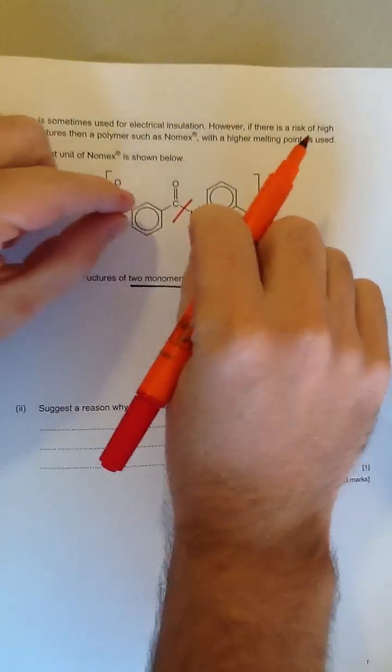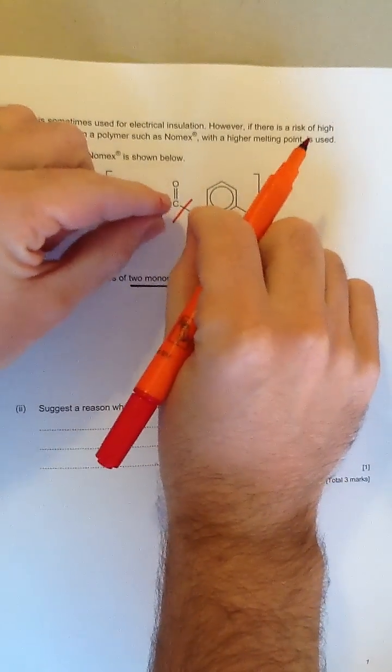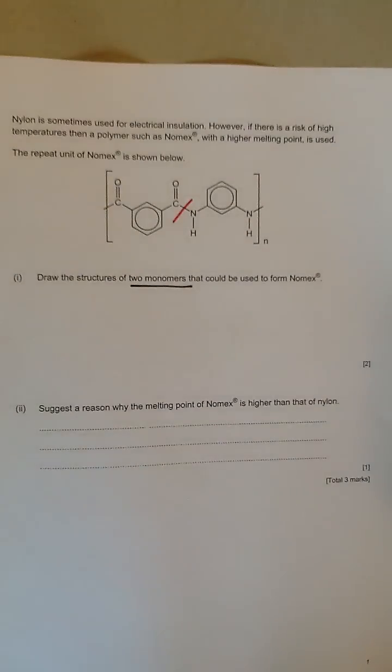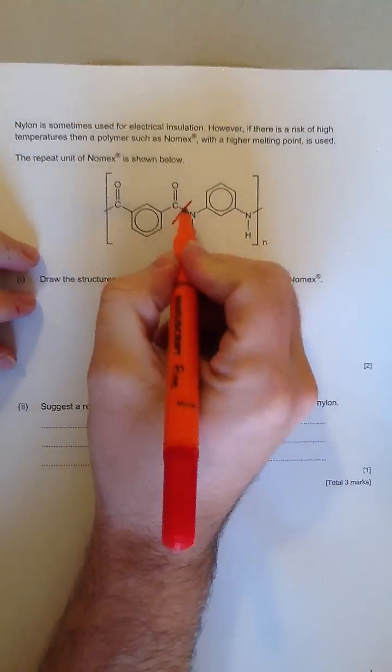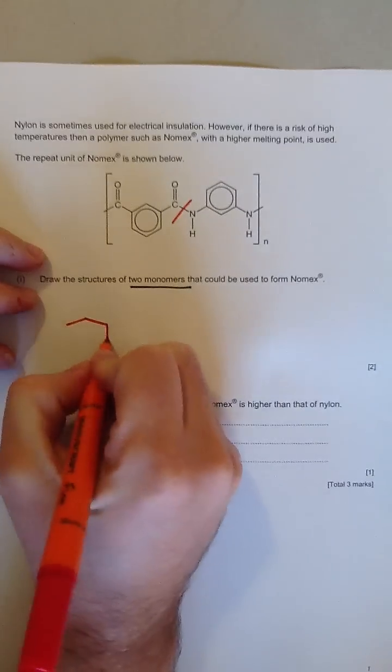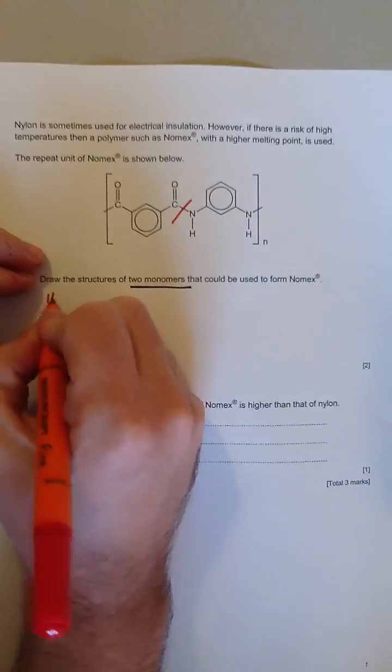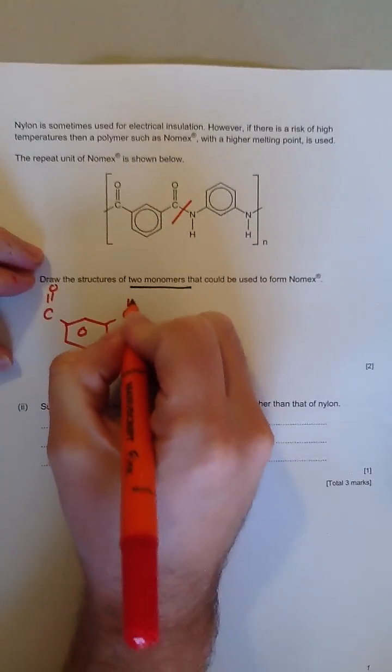So we're going to take the two parts of the polymer and pull it apart, like that, and that will give us our two monomers. So if we break the carbon-nitrogen bond, we're left with a benzene ring, this one, C double bond O, C double bond O.